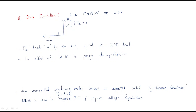When the over-excited synchronous motor operates under no-load condition, the armature current Ia leads V by 90 degrees. The machine operates at zero power factor leading. The effect of armature reaction is purely demagnetizing.